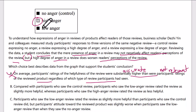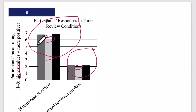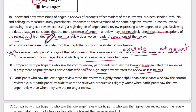Answer B: compared with participants who saw the control review, participants who saw the low anger review rated the review as slightly more helpful, whereas participants who saw the high anger review rated the review as less helpful. Compared to the control, low anger was slightly more helpful — and it was. Whereas high anger was less helpful, which is accurate to the graph. Moreover, it's relevant to our question. So this is both accurate and relevant.